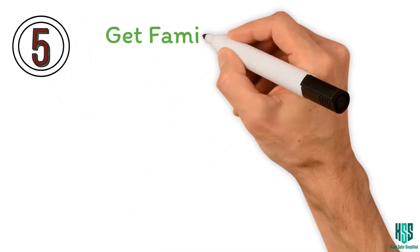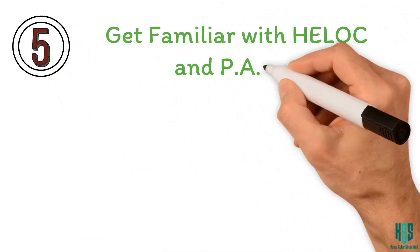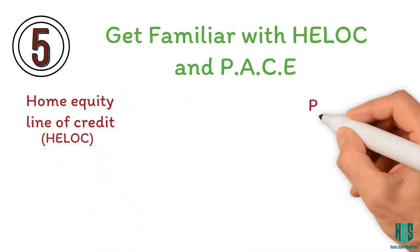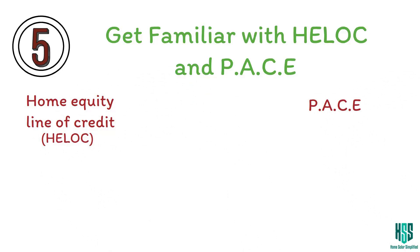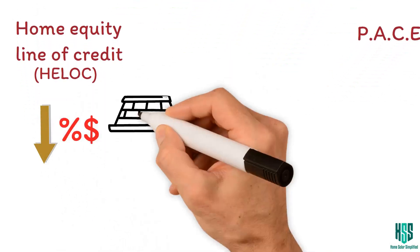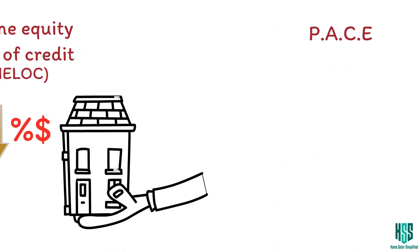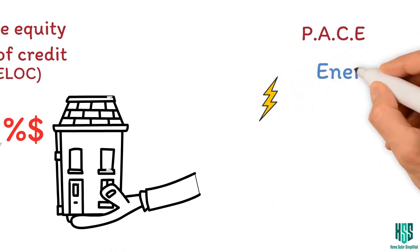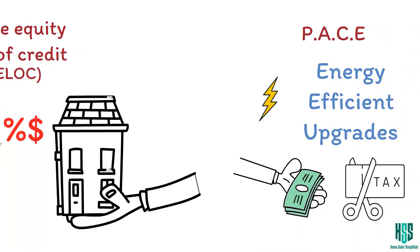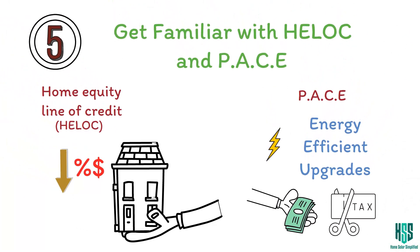Tip five, get familiar with HELOC and PACE. Home equity line of credit, or HELOC, and PACE programs are like the new kids in town. HELOC has lower interest rates because your home's got your back. PACE, it's a program that helps you make energy efficient upgrades and pays back through your property taxes. Just be sure to dig into the details.